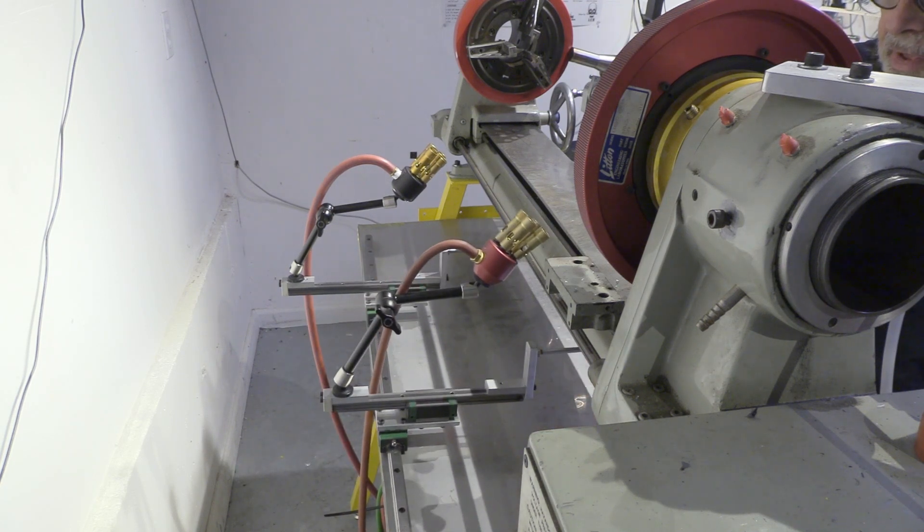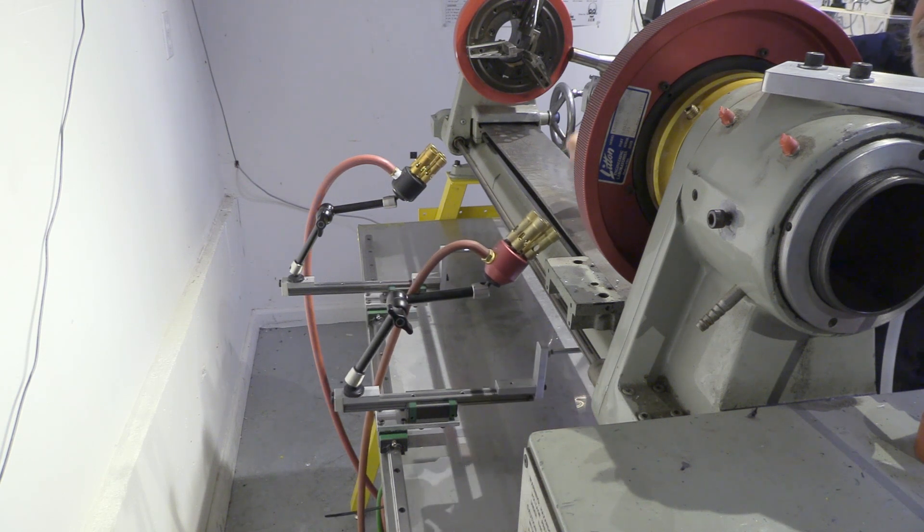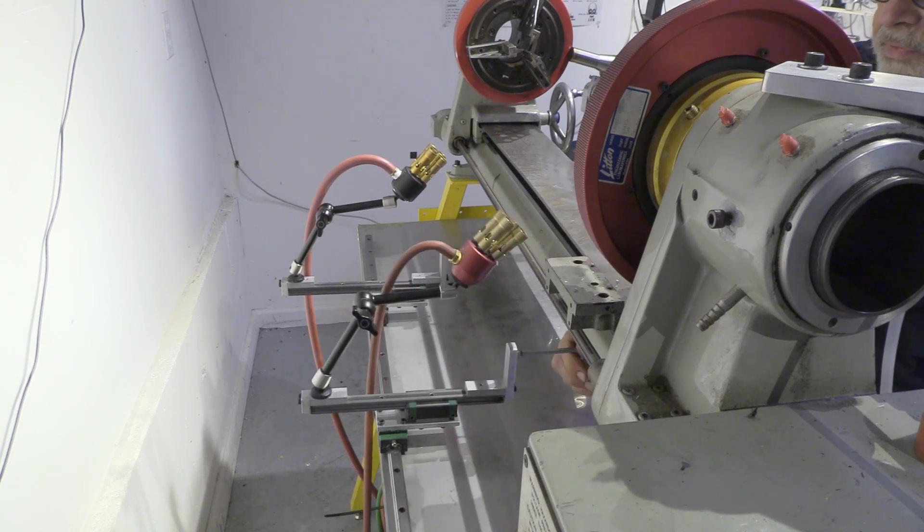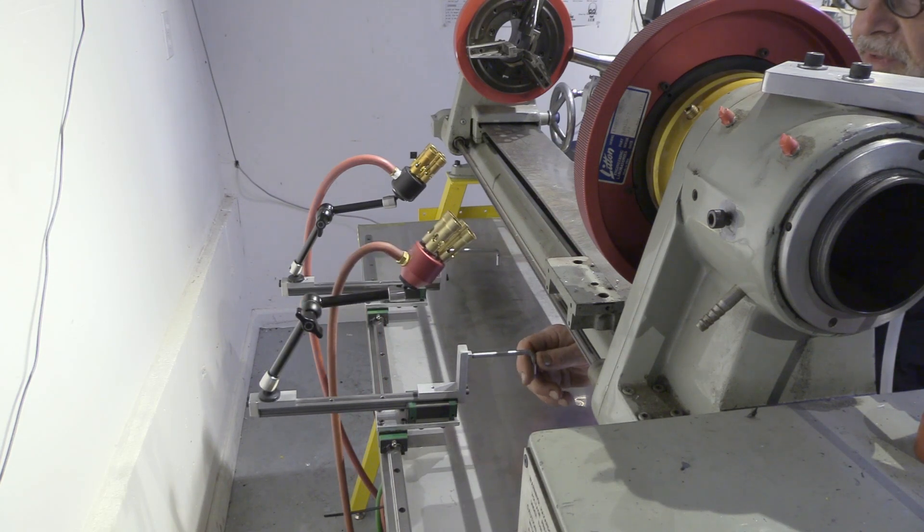This little lathe, because it's such a small lathe, I can't actually put the Bunsen under the workpiece. But this turns out to be a perfectly acceptable substitute.